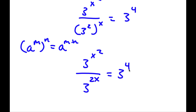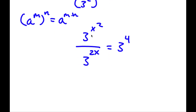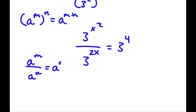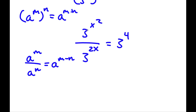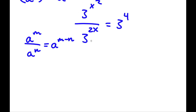This is equal to 3 to the power of 4. Now if you notice all our bases are 3, which makes it much simpler to solve. Another property of exponents is that if I have a to the power of m over a to the power of n, this equals a to the power of m minus n. So 3 to the power of x squared over 3 to the power of 2x equals 3 to the power of x squared minus 2x.